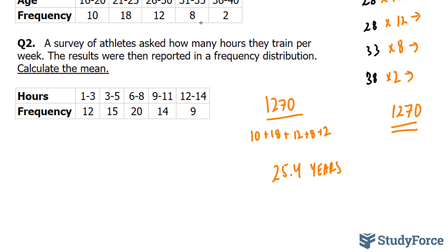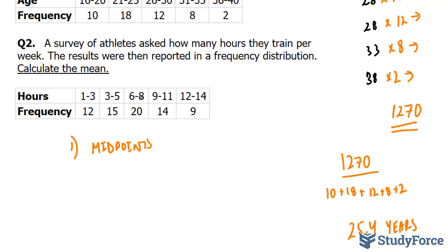Moving on to question 2. A survey of athletes asked how many hours they trained per week. The results were then reported in a frequency distribution. Calculate the mean. So once again, what we'll do is first find the midpoints for the groups. So this is 2, this is 4, this is 7, 10, and 13. That's done.